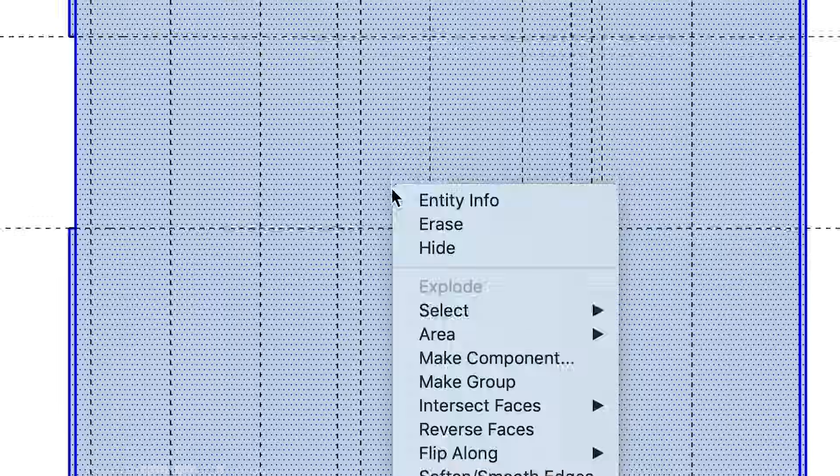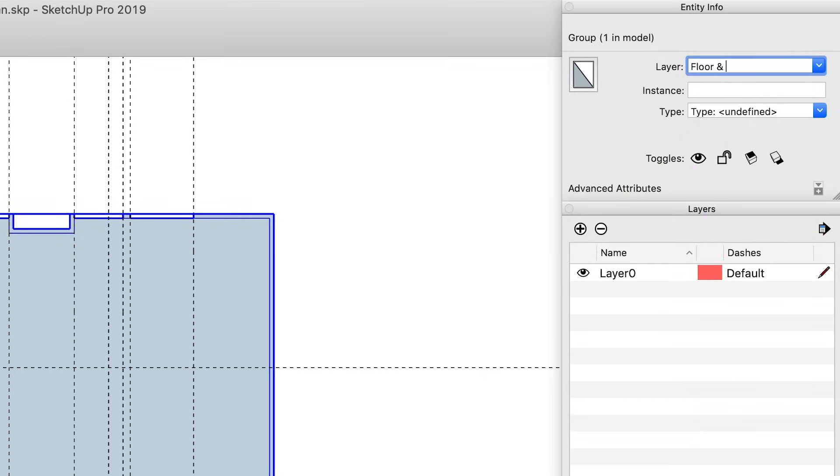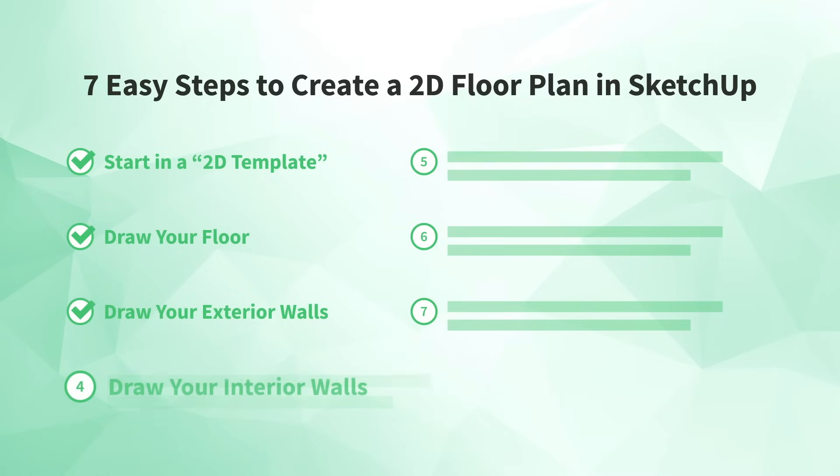So group now, and your future self will definitely thank you. So now that you're at a point where you've drawn your floor and exterior walls, select everything and make it into a group. While you're at it, now's a great time to put that group onto its own layer. This will make it easier to isolate the exterior walls as needed down the road. Okay, once you've got your floor and exterior walls grouped, you're ready for the next step. Number four, draw your interior walls.